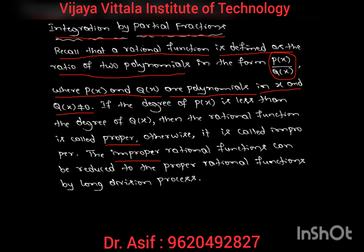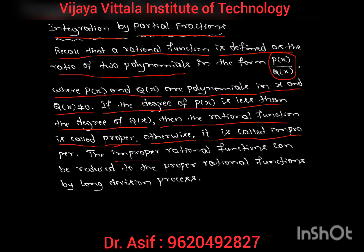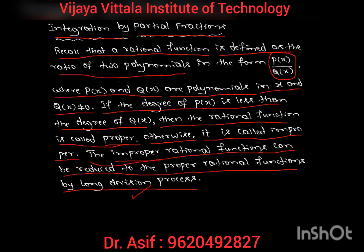If the degree of P of x is less than the degree of Q of x, then such a rational function is called a proper rational function. If the degree of P of x is greater than or equal to the degree of Q of x, then such a rational function is called an improper rational function. The improper rational functions can be reduced to proper rational functions by the long division process. We will see that division process during the problems.